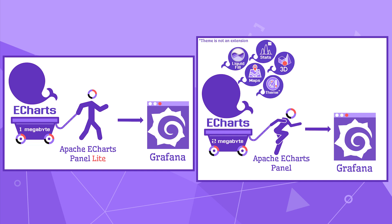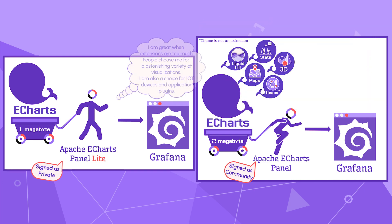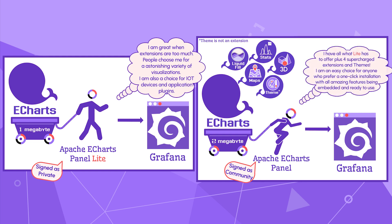The regular plugin is signed as a community plugin, meaning you can install it from the Grafana catalog. The Lite plugin is signed as private and is an excellent choice for IoT devices and application plugin development. If the extensions do not bother you, the regular plugin is your choice — everything is included.